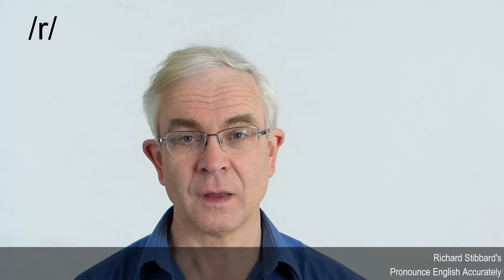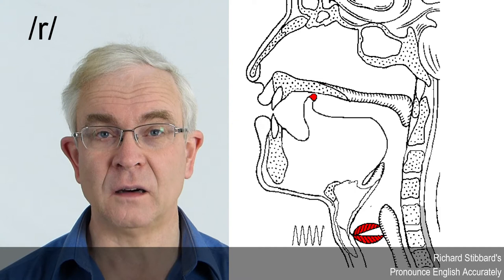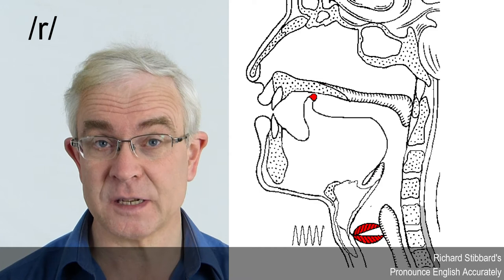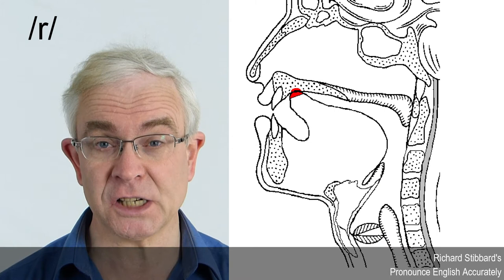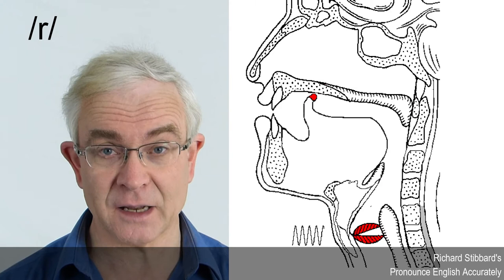Here's the speech organs diagram. A-r-r, a-r-r. The place of articulation is post-alveolar again. The tip of the tongue is far behind the alveolar ridge, further back than it was for sh and zh, and now it's curled back and raised high up near the hard palate. R. Because of the curling back of the tongue, it's termed retroflex — the tongue is flexed back.